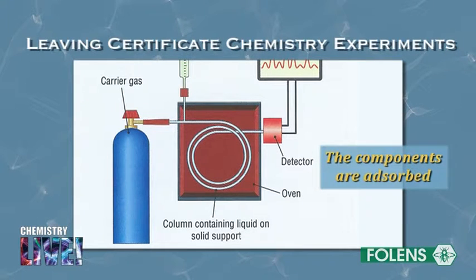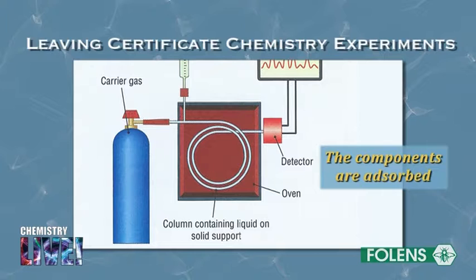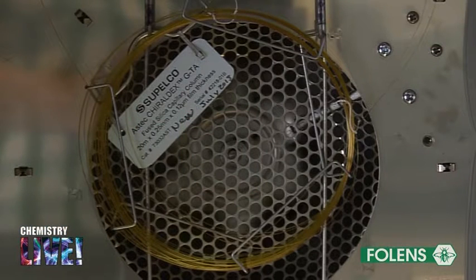The components of the mixture are adsorbed to different extents on the stationary phase in the coil. Therefore, the various components in the mixture are separated out as they flow through the column.